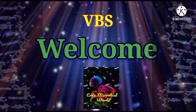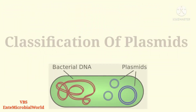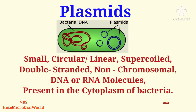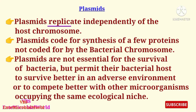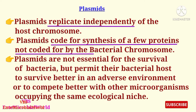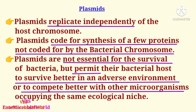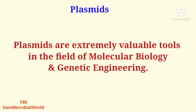Hello friends, welcome to my video. In this video we are going to talk about classification of plasmids. Plasmids are small circular or linear super-coiled double-stranded non-chromosomal DNA or RNA molecules present in the cytoplasm of bacteria. Plasmids replicate independently of the host chromosome and code for synthesis of a few proteins not coded for by the bacterial chromosome. Plasmids are not essential for the survival of bacteria, but permit their bacterial host to survive better in an adverse environment or to compete better with other microorganisms occupying the same ecological niche.